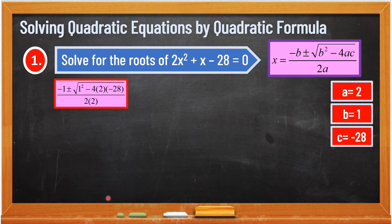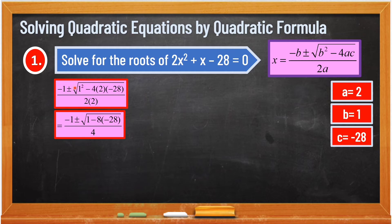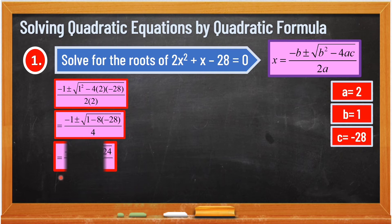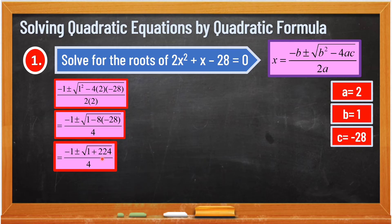Next, we first solve the part with the exponent — the squared term. Just copy the other parts: negative 1, plus or minus. Simplify 1 squared: 1 squared is 1. Then negative 4 times 2 is negative 8, times negative 28, over 4 — because 2 times 2 is 4. We multiply negative 8 and negative 28: 8 times 28 is 224. So we have negative 1 plus or minus the square root of 1 plus 224, over 4.